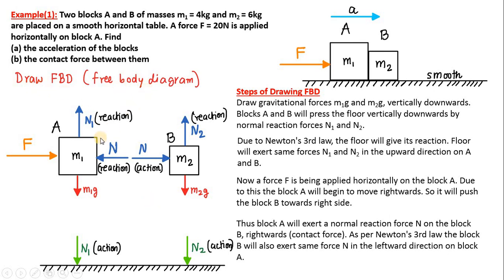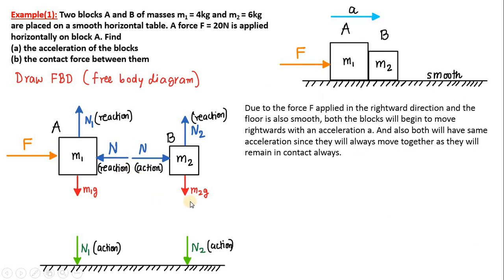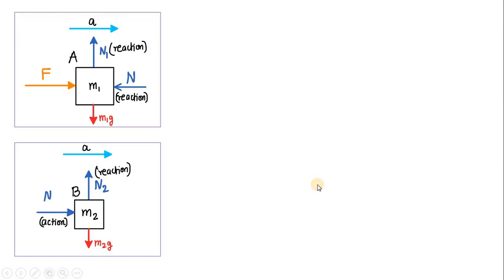The free body diagram shows the bodies and all forces acting on them separately. Due to force F applied rightward and the smooth floor, both blocks will begin to move rightward with the same acceleration A. Both have the same acceleration because they are always in contact — when A moves 1 cm rightward, B also moves 1 cm. Hence they always remain in contact and must have the same acceleration.